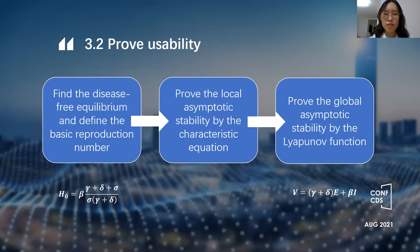Then is the work of proving the model's usability. We first find the disease-free equilibrium and define the basic reproduction number, written in the form shown. Then we prove the local asymptotic stability by the characteristic equation and construct a Lyapunov function to prove the global asymptotic stability.